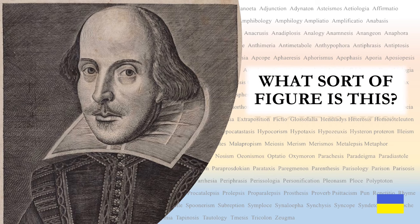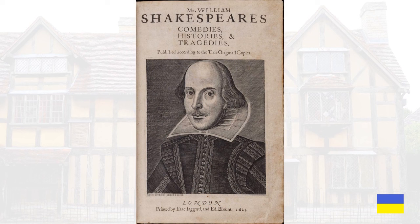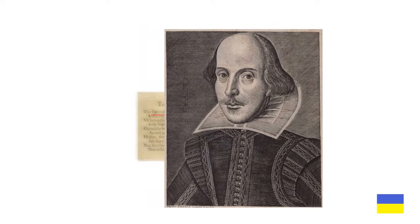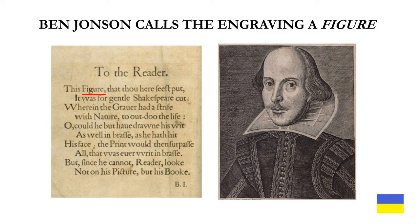Presenting: what sort of figure is this? We're going to return to the title page of the First Folio by William Shakespeare, and we're going to pay attention to this engraving by Martin Droeshout the Younger. In the dedication to the reader, Ben Jonson calls the engraving a figure.